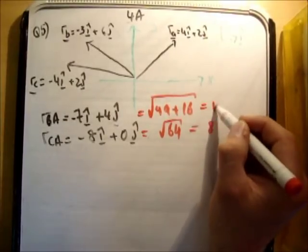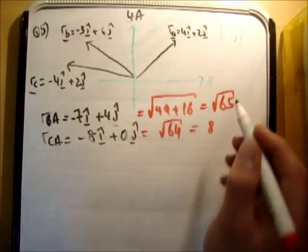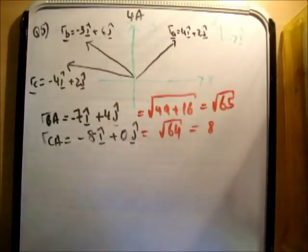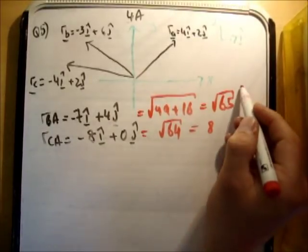This just becomes 8. And this becomes, let's say, root 65. All right. So which is bigger? Well, root 65 is clearly bigger than root 64. So it says, which is further from A? It is this one here.